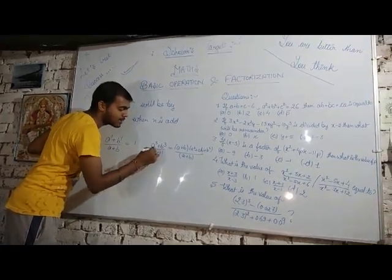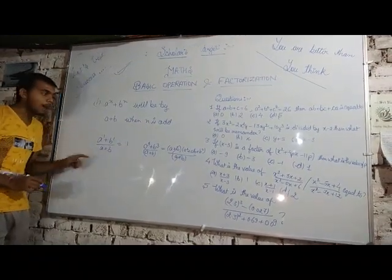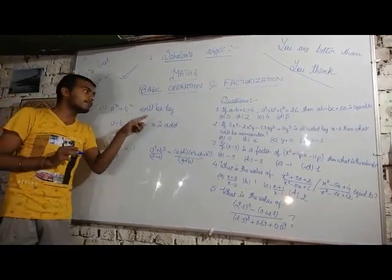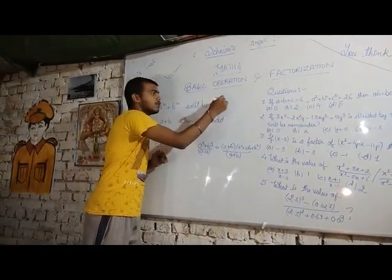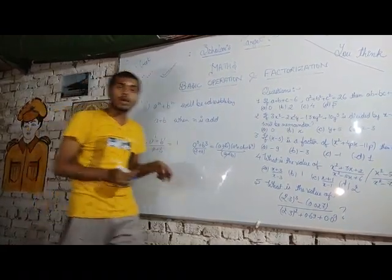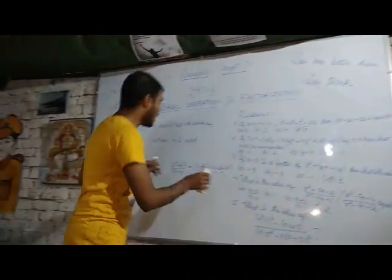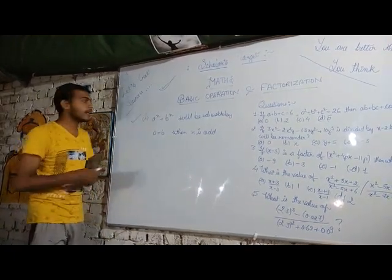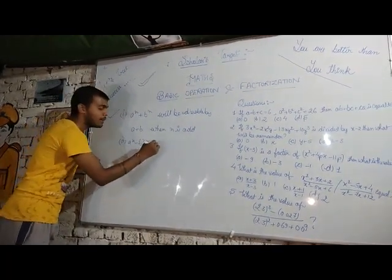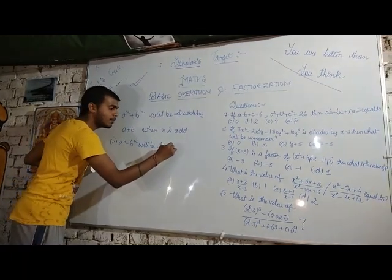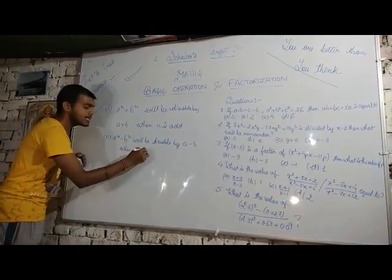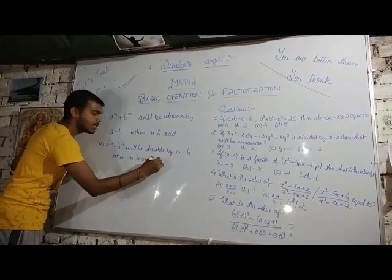a raised to power n plus b raised to power n will be divisible by (a + b) when n is odd. And a raised to power n minus b raised to power n will be divisible by (a - b) when n is any natural number — any natural number.